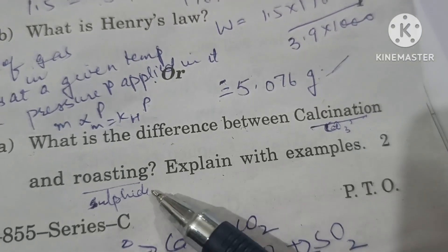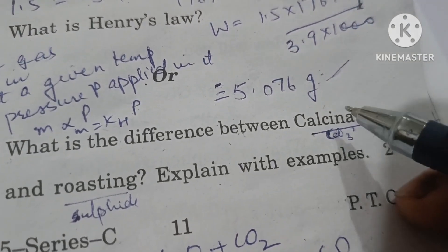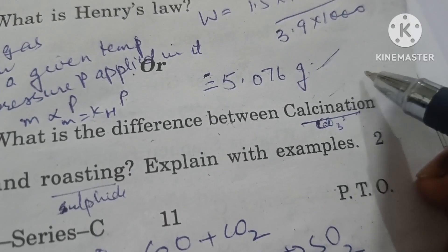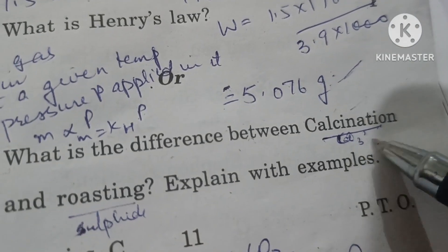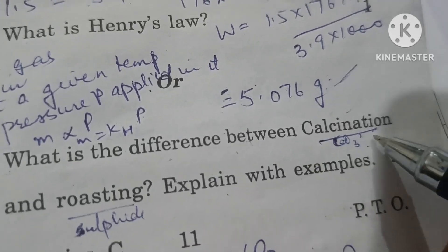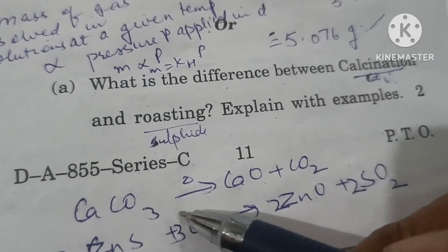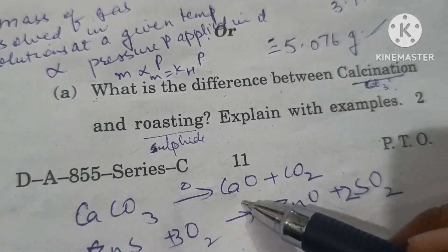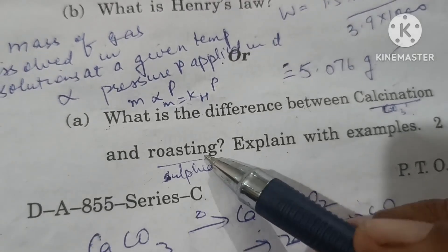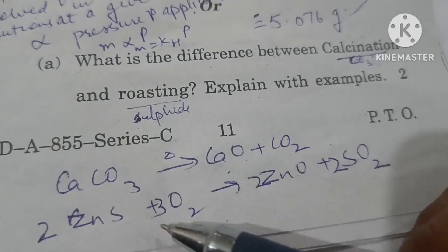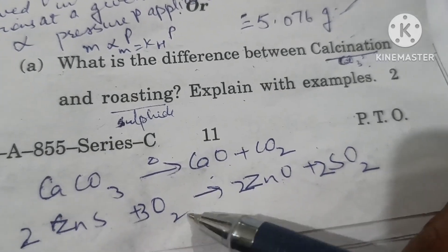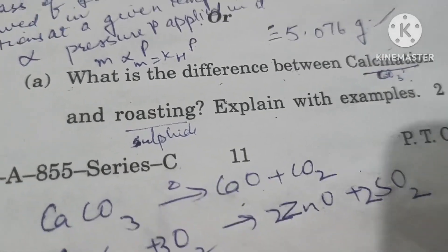What is the difference between calcination and roasting? Calcination is heating of ore in absence of air or limited supply of air. For example, in carbonate ores we do calcination. CaCO3 on heating gives CaO plus CO2. Roasting is heating of ore in presence of air. For example, in sulfide ores we do roasting. Zinc sulfide plus oxygen forms zinc oxide plus sulfur dioxide.